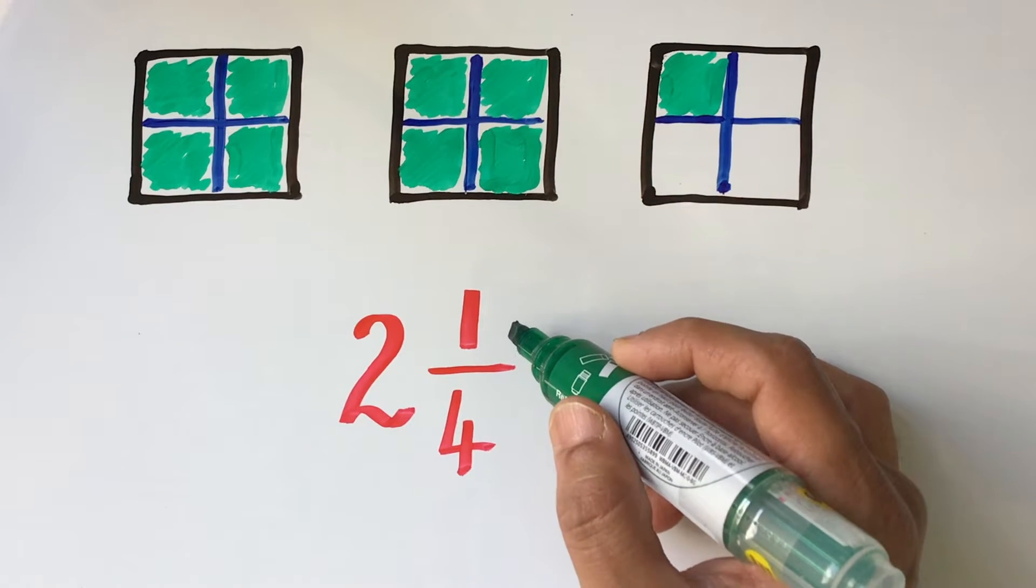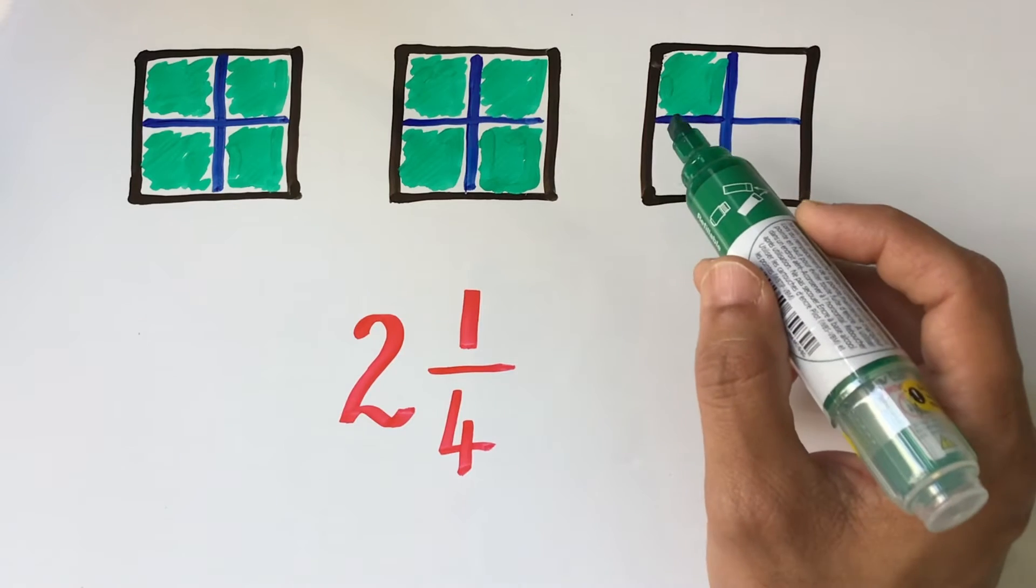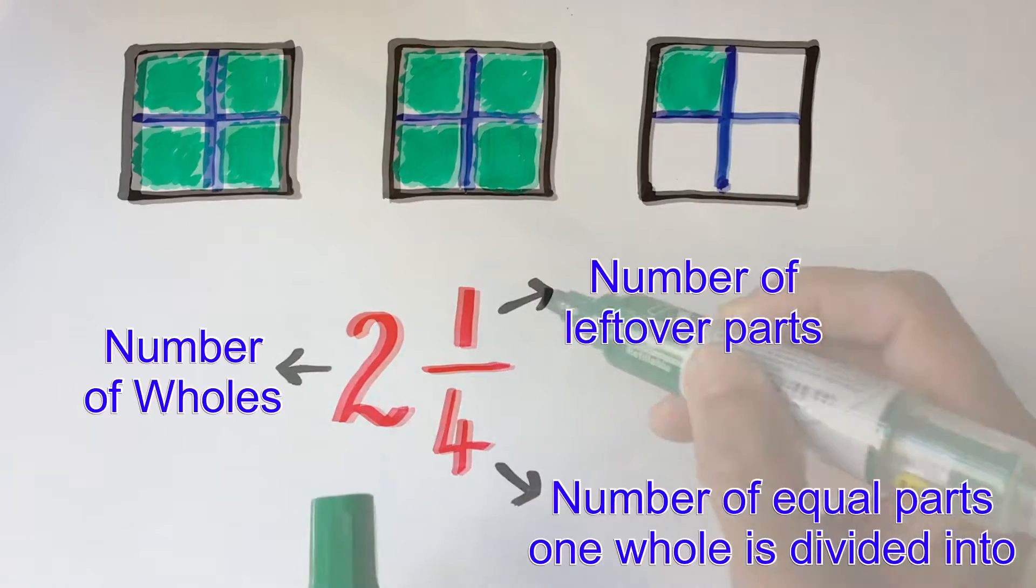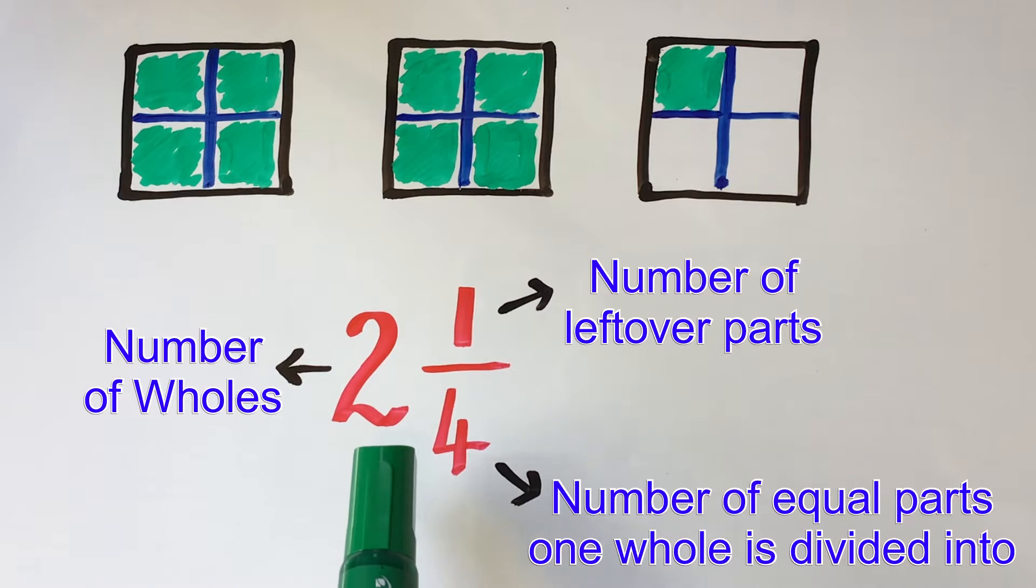And the numerator or the top number tells us the leftover part, in this case 1. Since now we know what a mixed fraction or a mixed number is, let us see how we could convert this into an improper fraction.